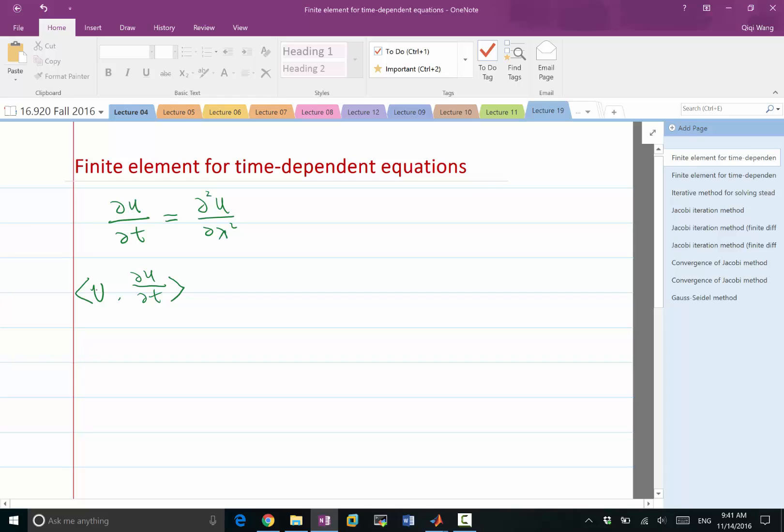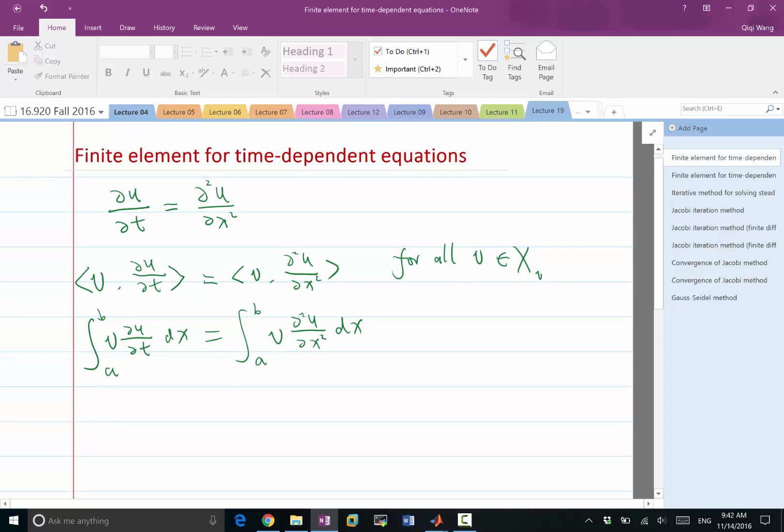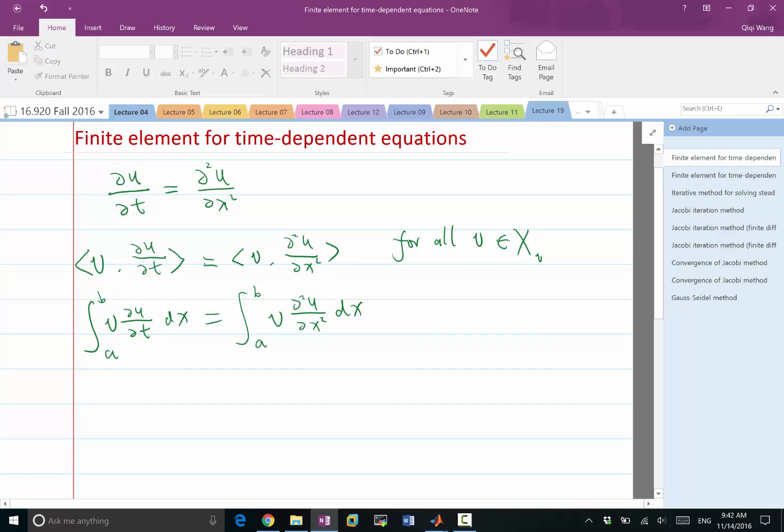v times dU/dt dx would be equal to v times the second derivative, for all v within a certain space that we don't know yet. So let's decide about it later. So let's now write down what this inner product is. First of all, we have v times dU/dt dx over a one-dimensional space from a to b, would be equal to the integral from a to b, v times the second derivative of u.